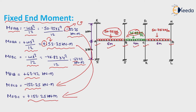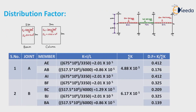Now we will calculate distribution factor. In the substitute frame we have four joints: A, B, C, D. Joints A and D are similar as they are at the ends. From joint A, three members pass: AE, AB, and AI. Relative stiffness is calculated as I/L. Moment of inertia of beam I_B = 230 × 300³/12 = 517.5 × 10⁶ mm⁴. For column, I_C = 300 × 300³/12 = 675 × 10⁶ mm⁴. Relative stiffness for AE: I/L with span 3350 gives 2.01 × 10⁵. For AB: 0.86 × 10⁵. For AI: 2.01 × 10⁵. Note: AE and AI are columns, AB is a beam.